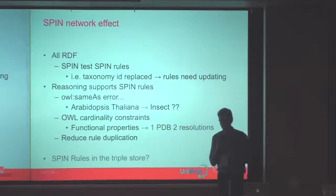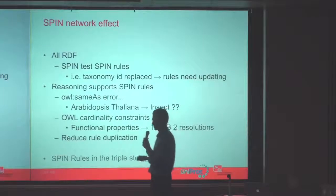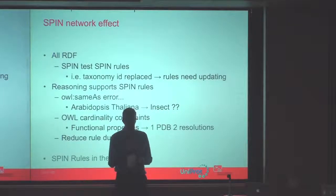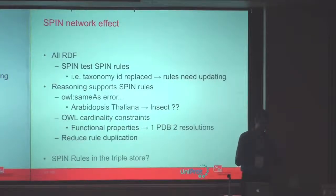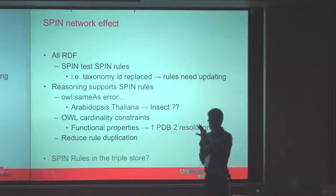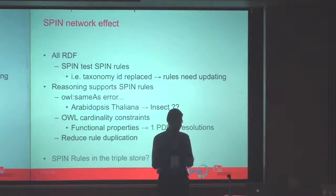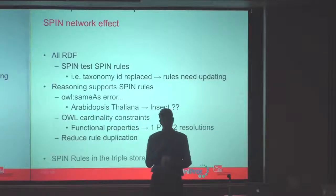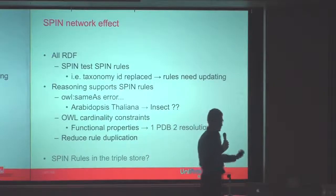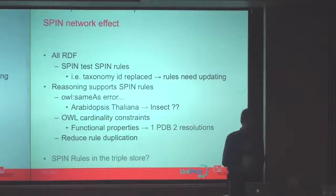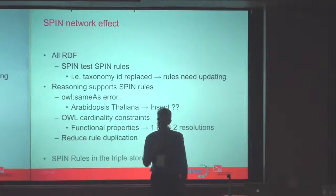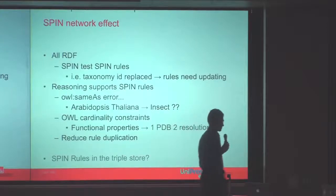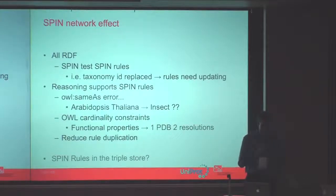SPIN and RDF has a bit of a network effect, because we find that we also need some quality rules of the rules themselves. As our data changes, we used to have a rule which said everything with a certain NCBI taxonomy ID has this property. Well, that taxonomy ID changed — it was merged with some other organism. The person who had to maintain the rules hadn't paid attention, so we had 40% of our rules that were no longer valid — testing things which were no longer required. It's very nice if you can actually test your rules to make sure they're still valid.